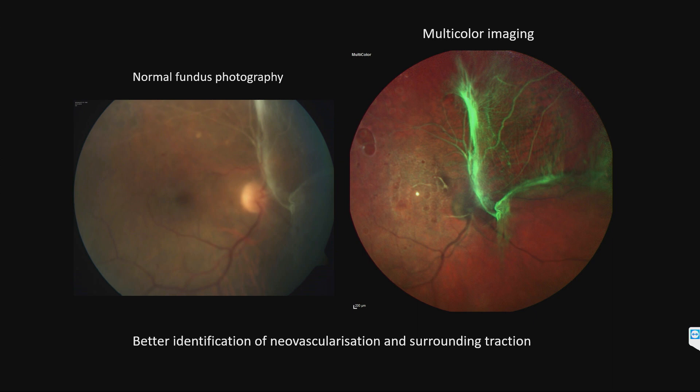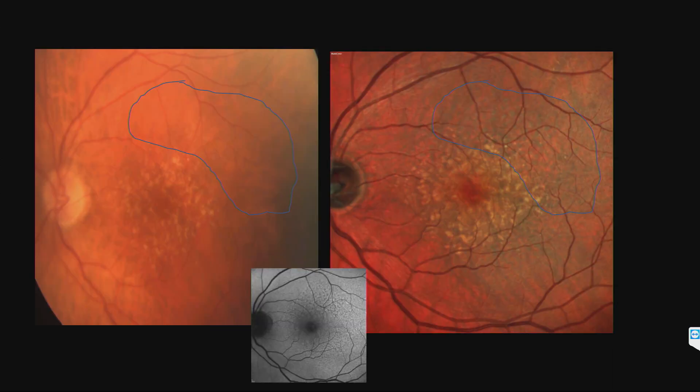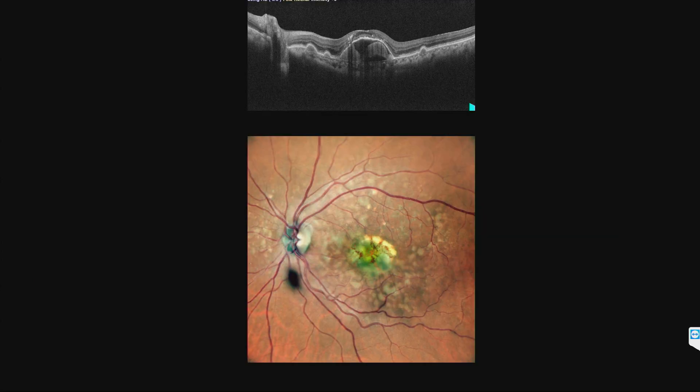In dry AMD, we know reticular pseudodrusens are predisposed for new vascular growth, so we need to identify them. Multicolor imaging picks up these lesions much better than conventional photography. You can see the target-like lesions in the multicolor imaging. Drusens are better made out, the margins are well defined. For following up a case of dry AMD, multimodal imaging is of good value.